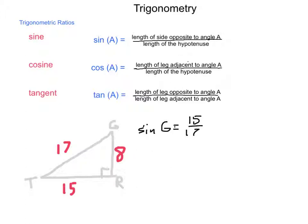If I needed the cosine of angle G, I would look at the leg adjacent, next to, meaning 8, divided by the hypotenuse. The tangent of angle G is going to be the leg opposite, that's 15, divided by the leg adjacent, which is 8.